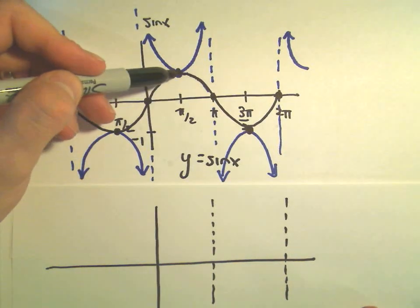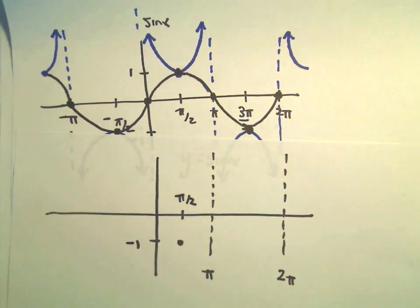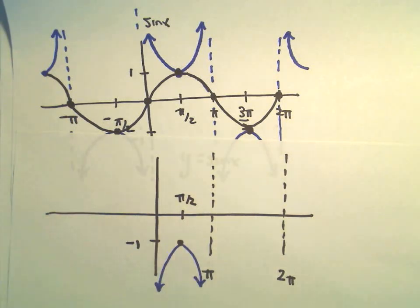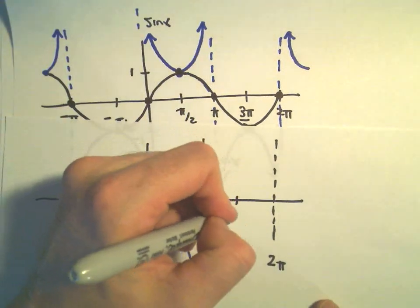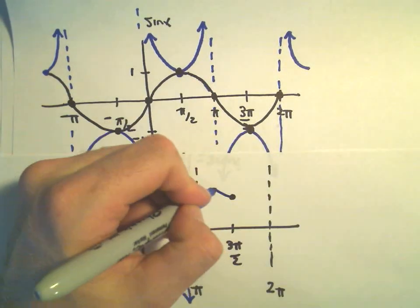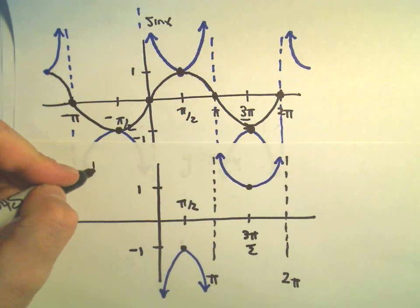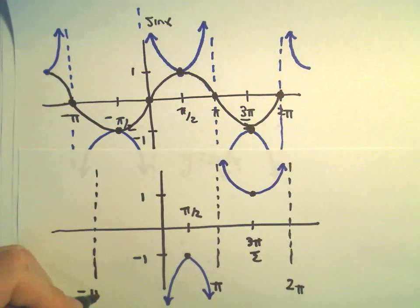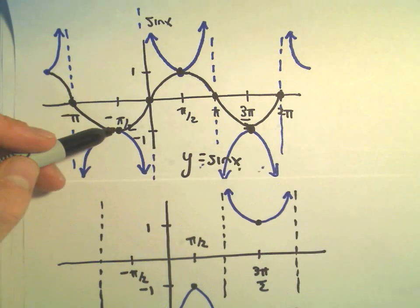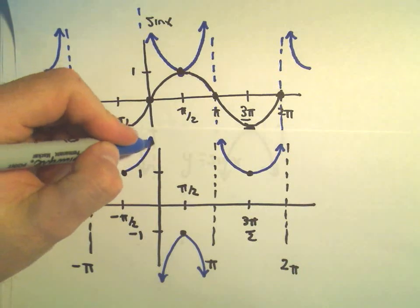Instead of being at pi over 2 comma 1, we would be at pi over 2 comma negative 1. And then instead of going up, since it's reflected, it would be going down. Likewise, at 3 pi over 2, instead of being at negative 1, we'd be up at positive 1, and now it just goes up. At negative pi we'd have an asymptote. At negative pi over 2, instead of being at negative 1, we'll be up at positive 1 and come off the top.